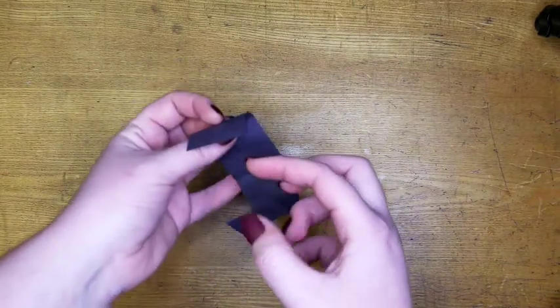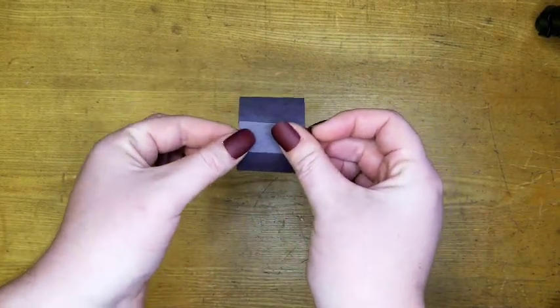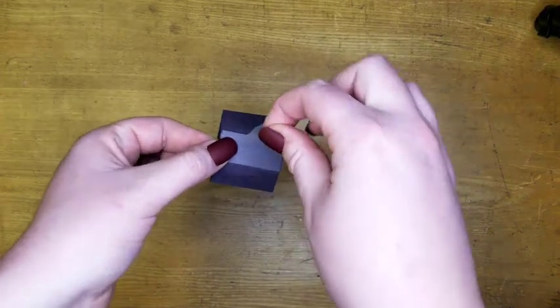To close the loop, touch two rectangles overlapping by one. Secure with some tape.